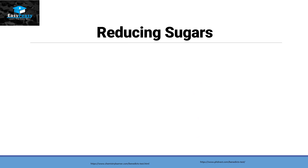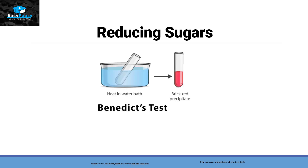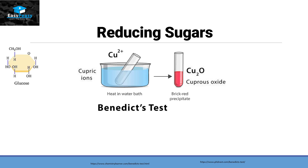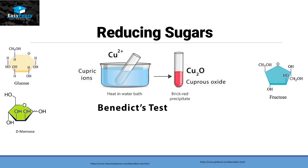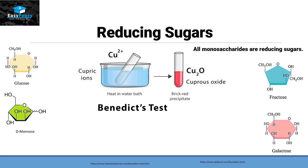Now we need to understand the concept of reducing sugars. Reducing sugars are those sugars that give a brick-red precipitate in the Benedict's test. This happens because the cupric ions present in the solution convert into cuprous oxide, which appears as brick-red precipitate. All the monosaccharides we discussed will perform this reaction, so all monosaccharides are reducing sugars.